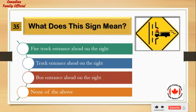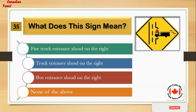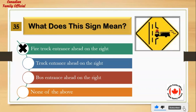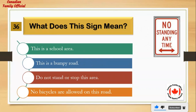What does this sign mean? Number 1: fire truck entrance ahead on the right. Number 2: truck entrance ahead on the right. Number 3: bus entrance ahead on the right. Number 4: none of the above. And the answer is: fire truck entrance ahead on the right.